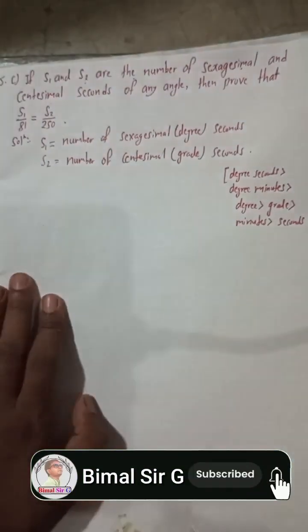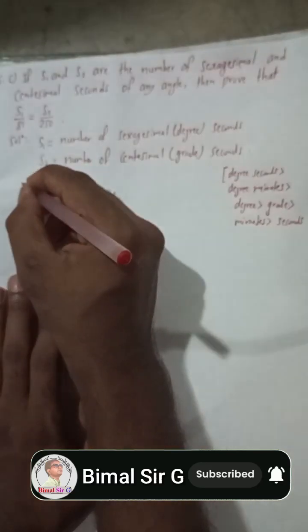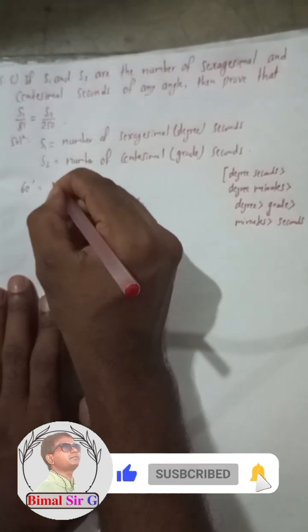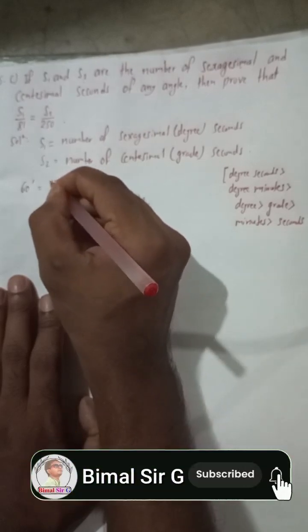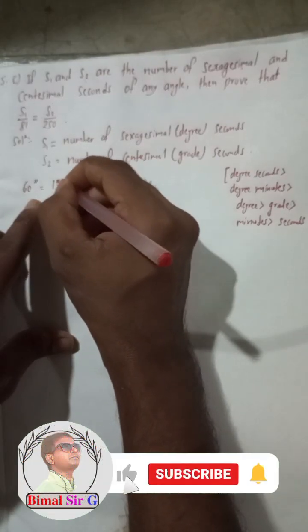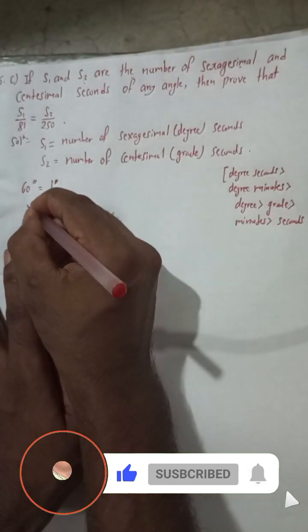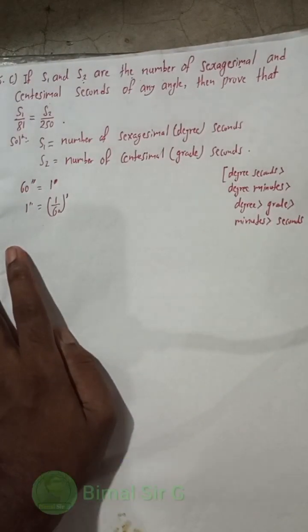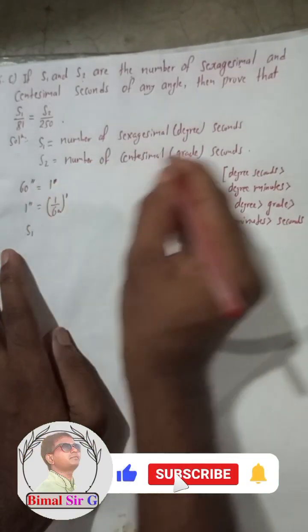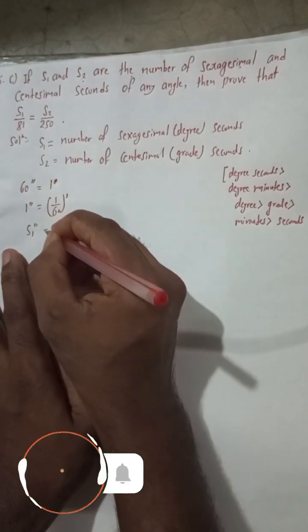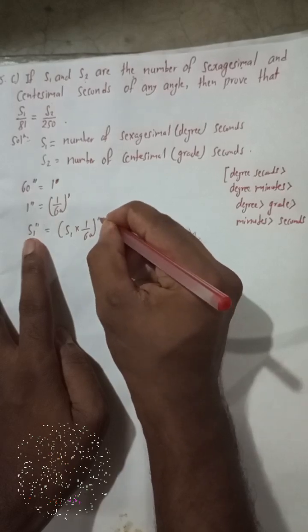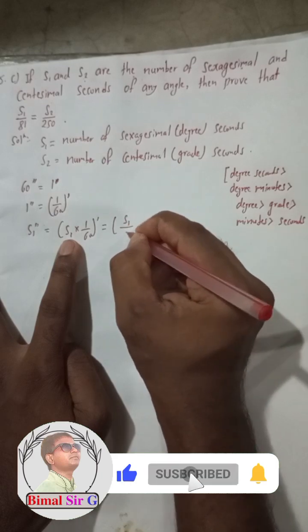Let's start. We know 60 seconds is equal to 1 minute, so 1 second equals 1/60 minute. Therefore, s1 seconds is equal to s1 × (1/60) minutes, which gives us s1/60 minutes.